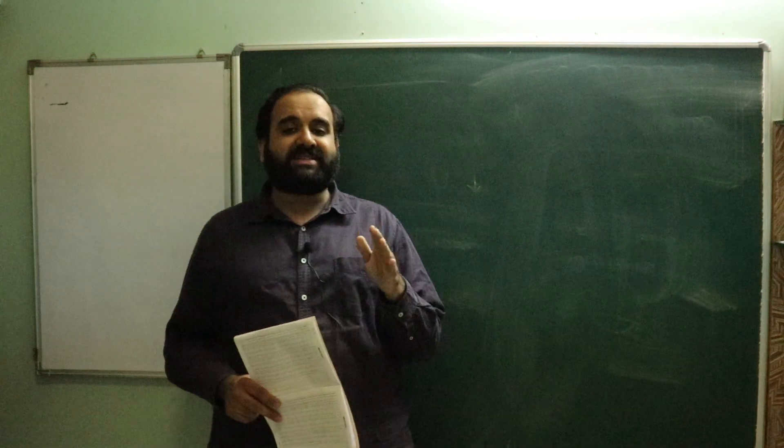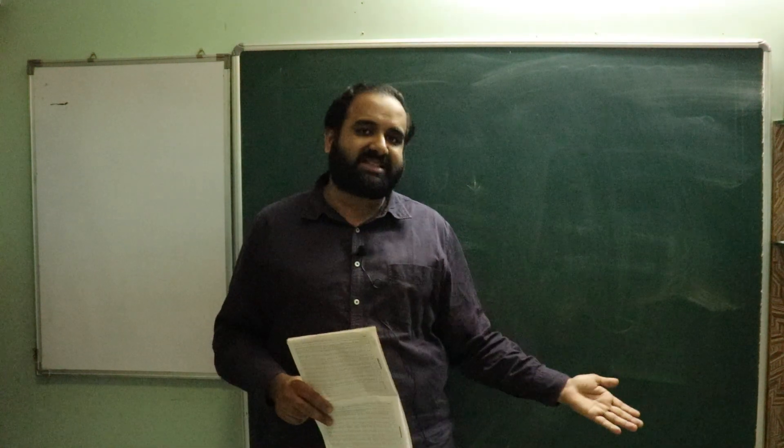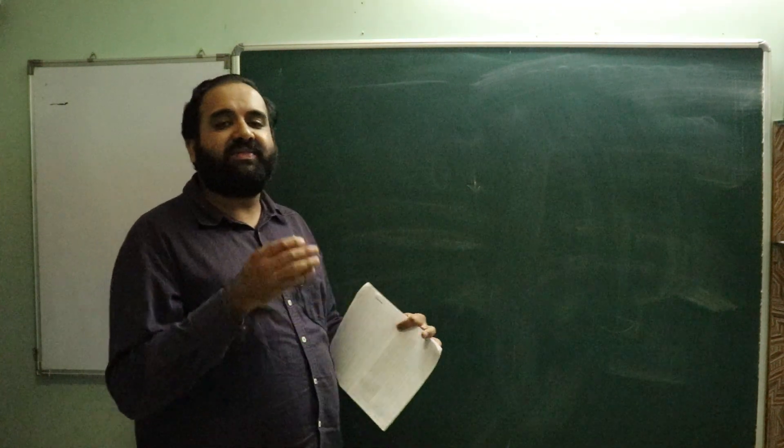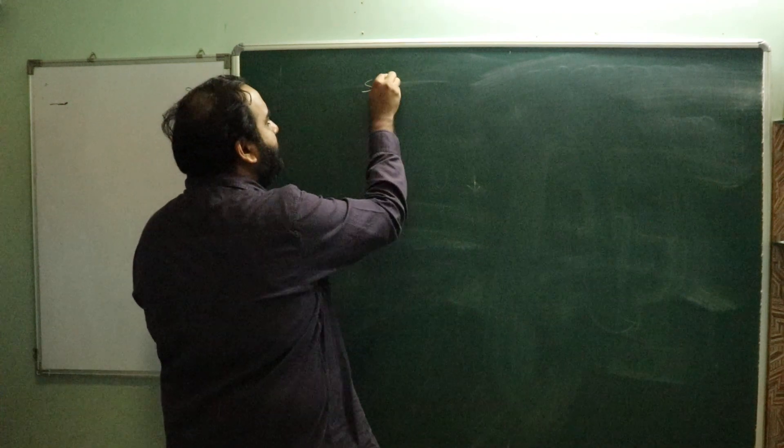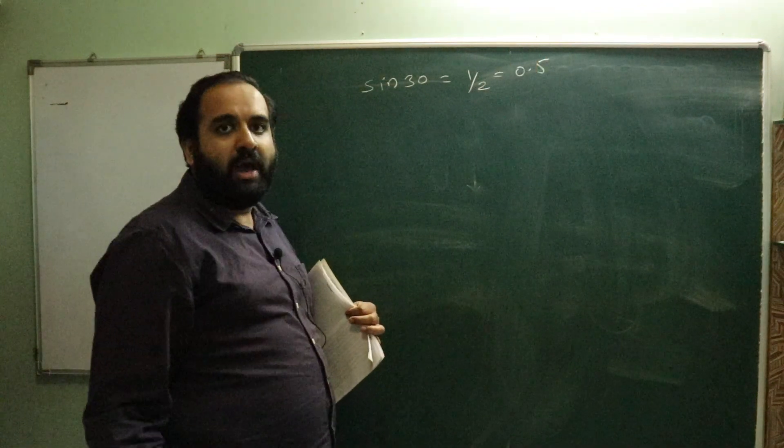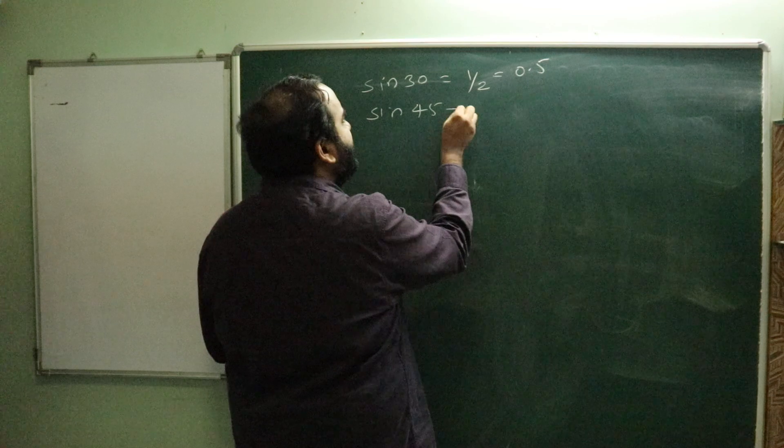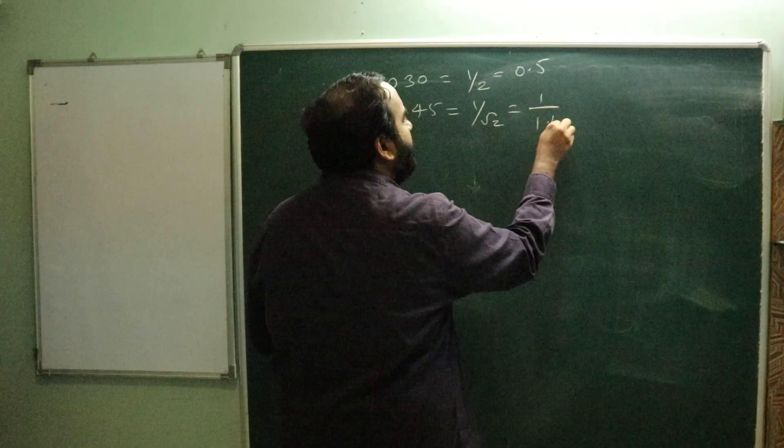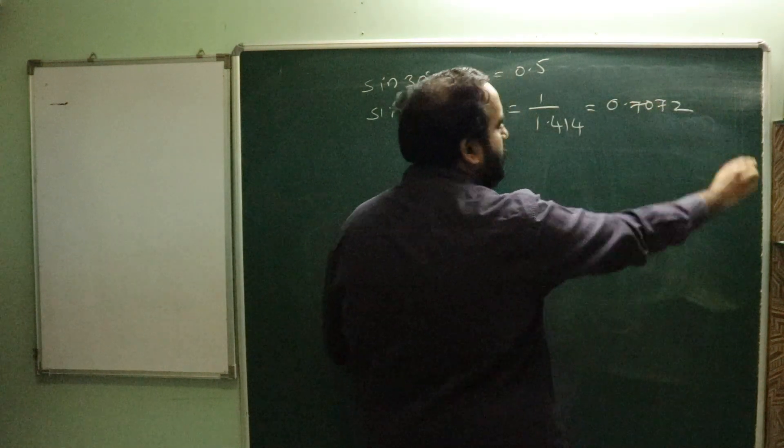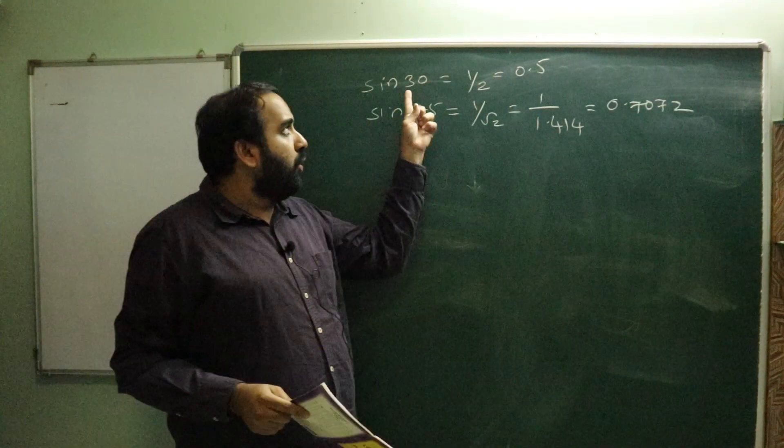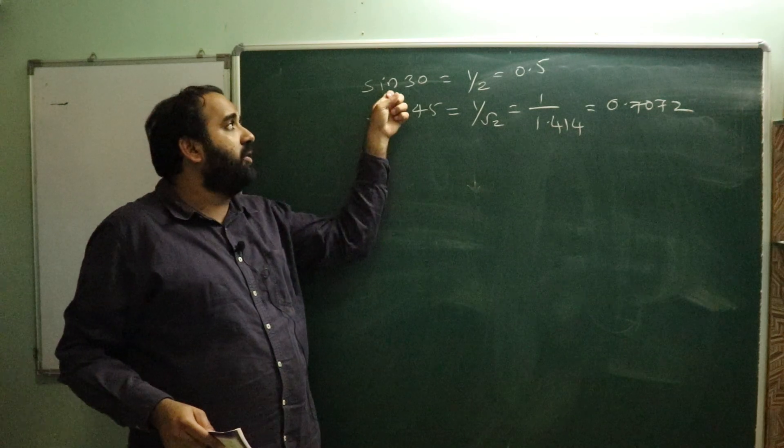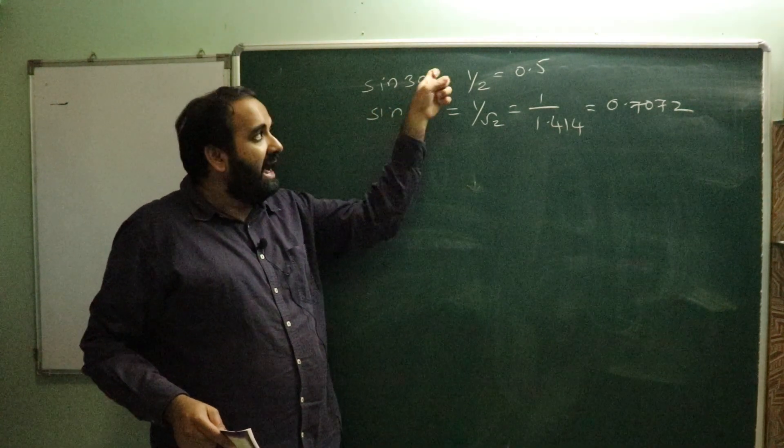Now what do you mean by this? In our lower classes we have always studied that sine 30° is 1/2, that is 0.5, or sine 45° is 1/√2, that is 1/1.414. If you solve it, it comes out to 0.7072. We know the values when the angles are given. Are you all there with me? We have found out this: the angle is given and I have found out the value for this.